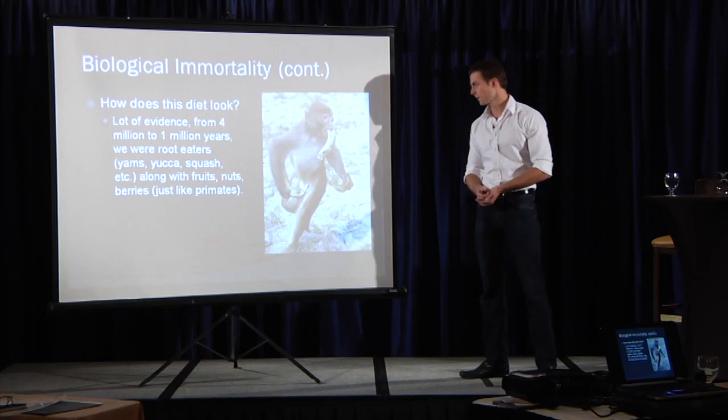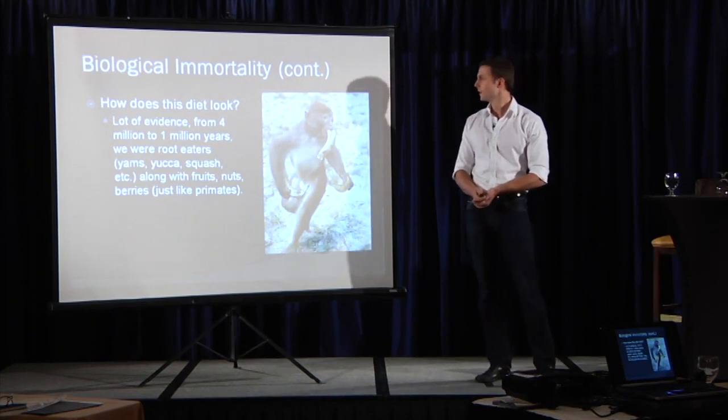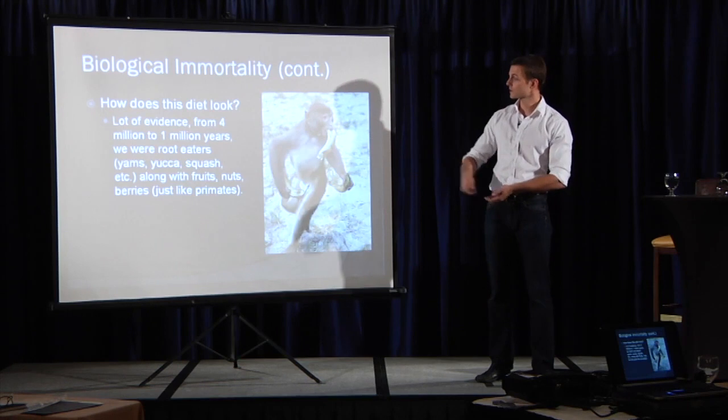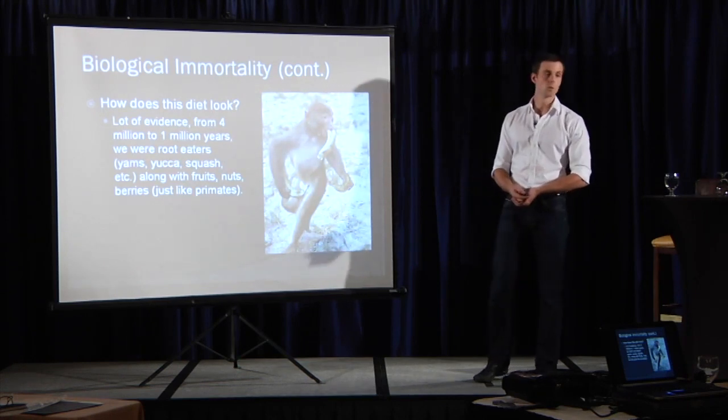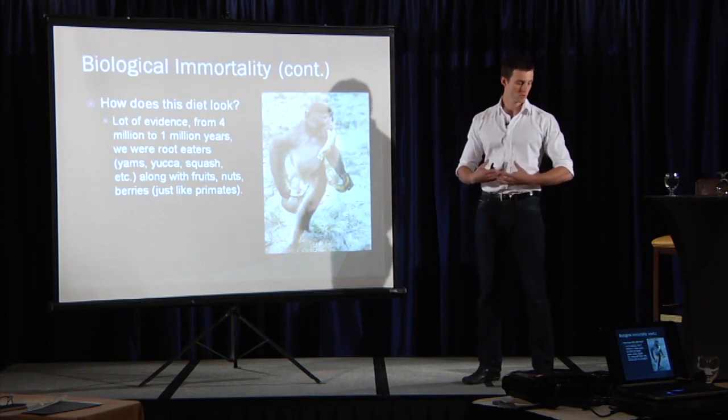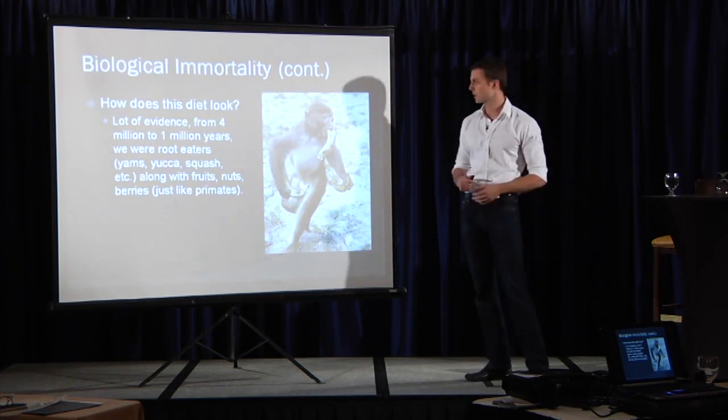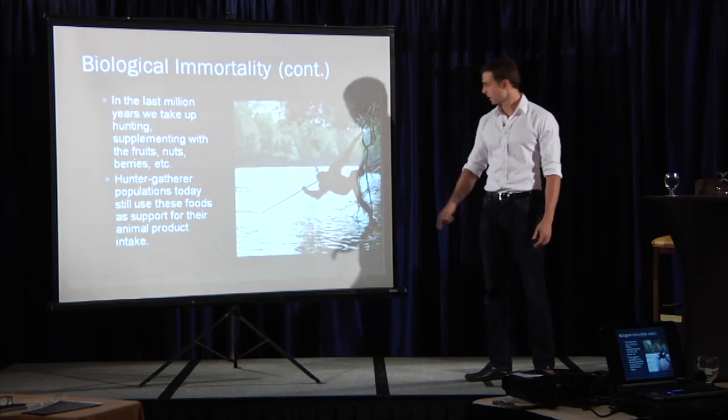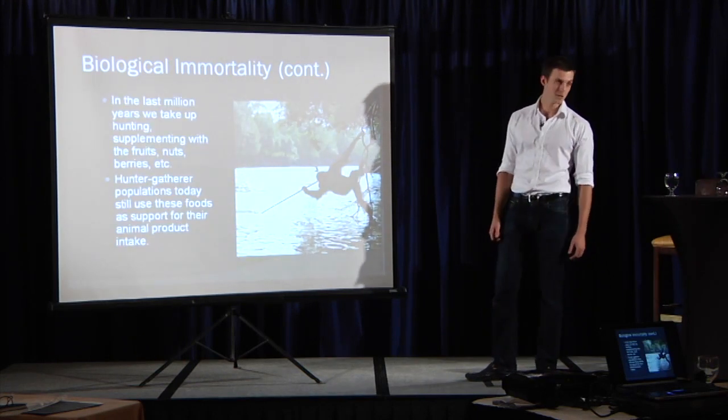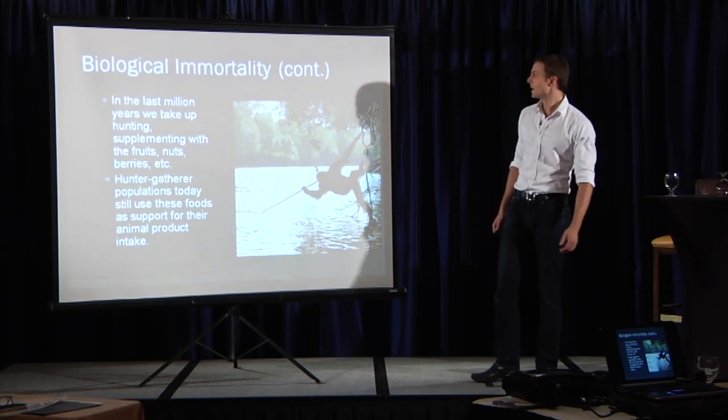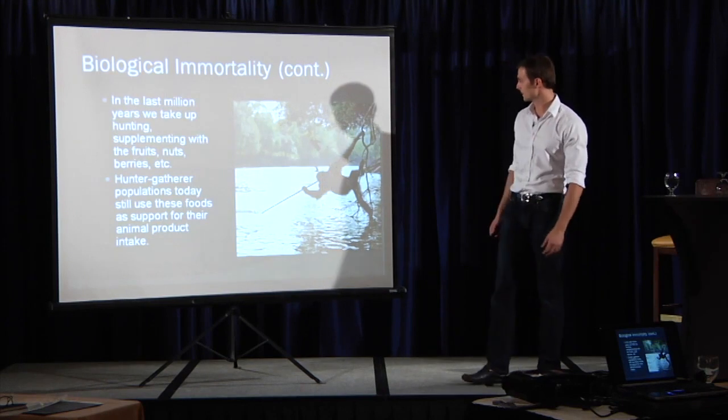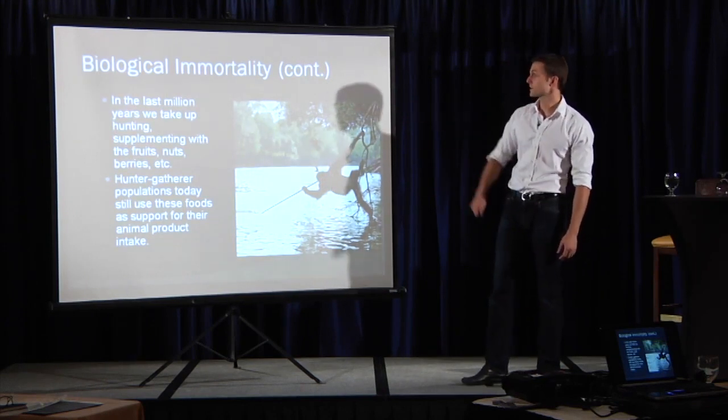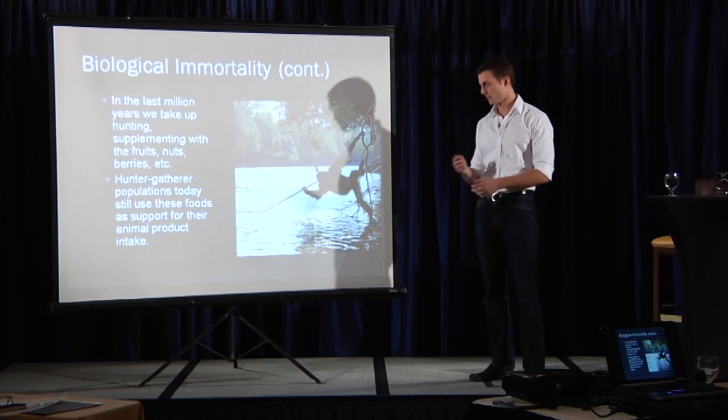So what are we talking about here, other than the banana crazed monkey? Lots of evidence from four million to one million years. We ate roots with fruits, nuts, and berries, just like primates. And then we take the gamble. We come down from the trees. We reduce the size of our stomach. Our brain gets bigger, we need more calories. So you get like Captain Orangutan here spearfishing. And you thought we came up with it. Common ancestor figured out. That's a pretty cool little photo there. Take up hunting, supplementing with the fruits, nuts, and berries. And most hunter-gatherer populations still support their animal intake this way.